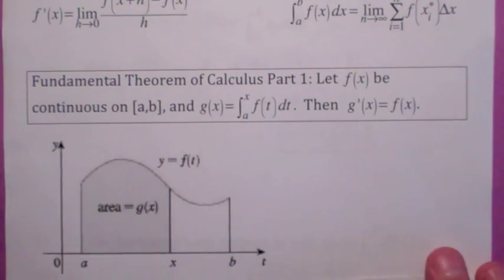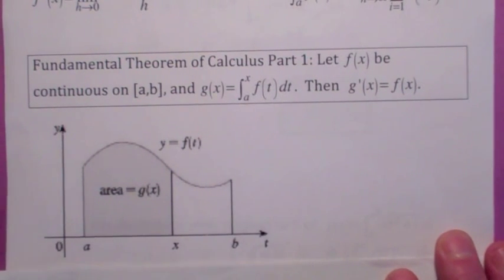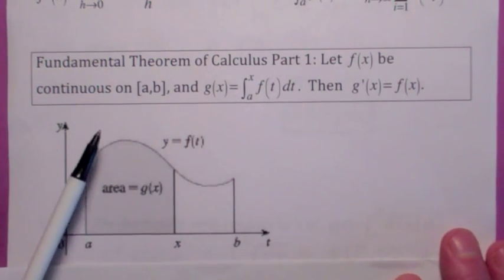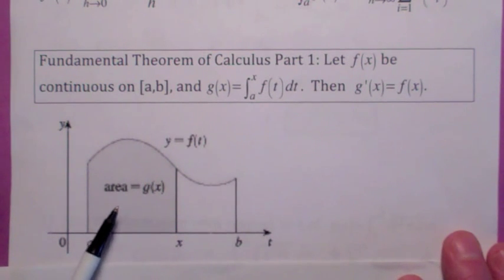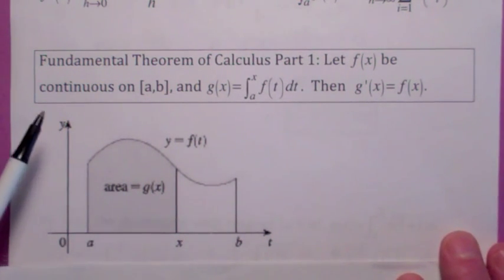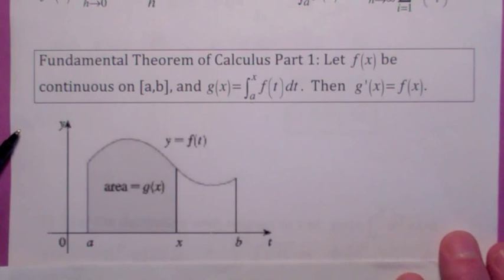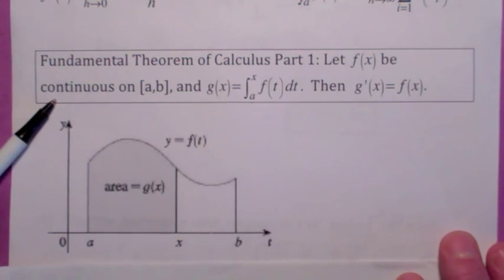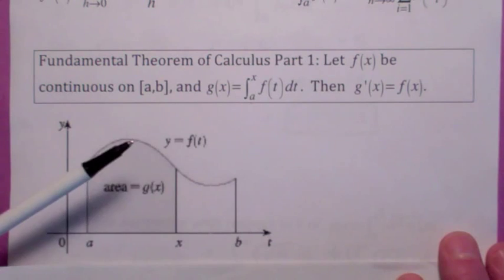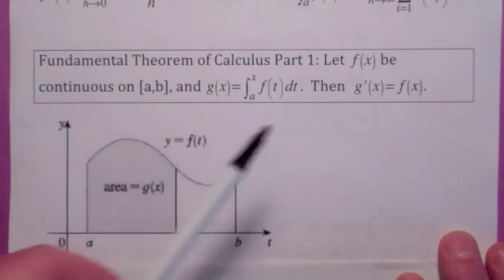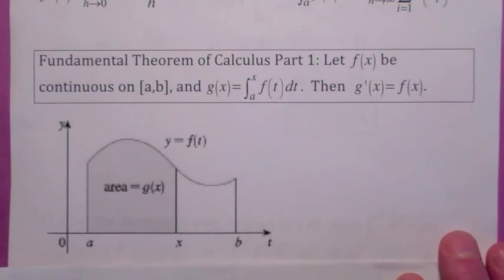Remember this function g of x? This function g of x is actually the area under the graph of f of t from a to x. So think of this as the area-so-far function. The fundamental theorem part one says, as long as the function is continuous, then the rate of change of this area function with respect to x — which tells you how fast this area is increasing — is equal to the function itself.